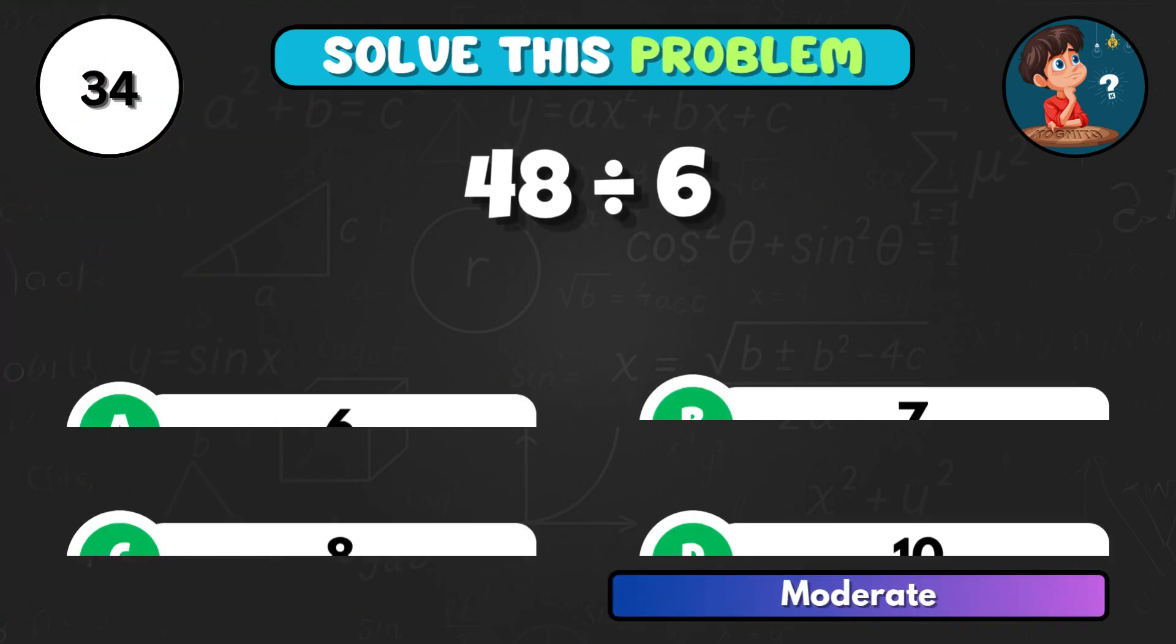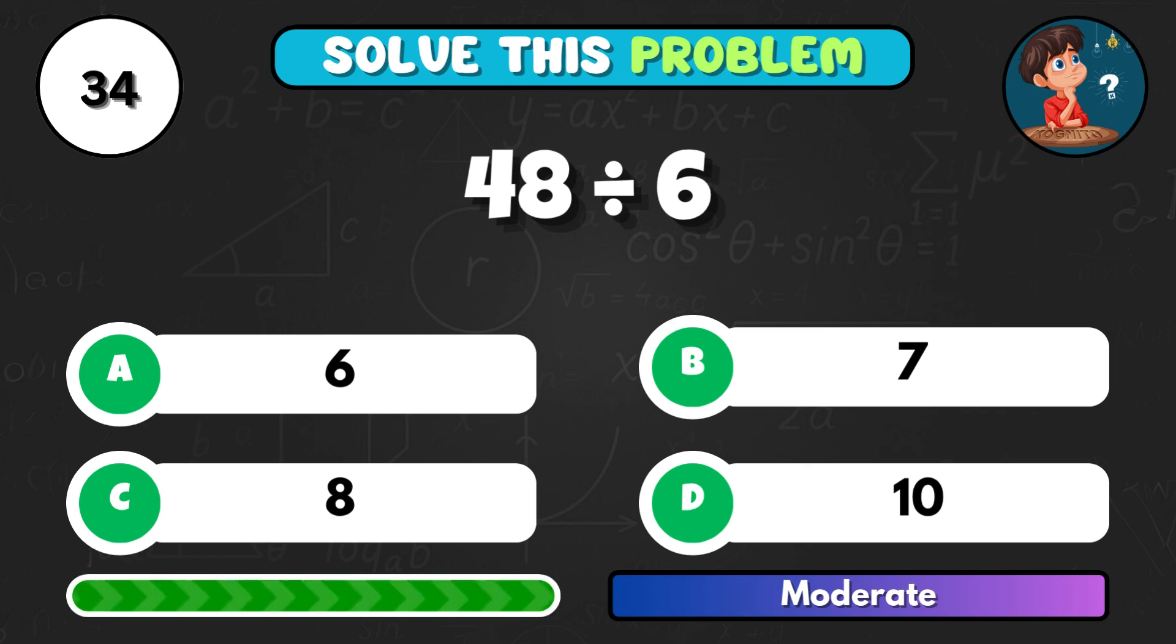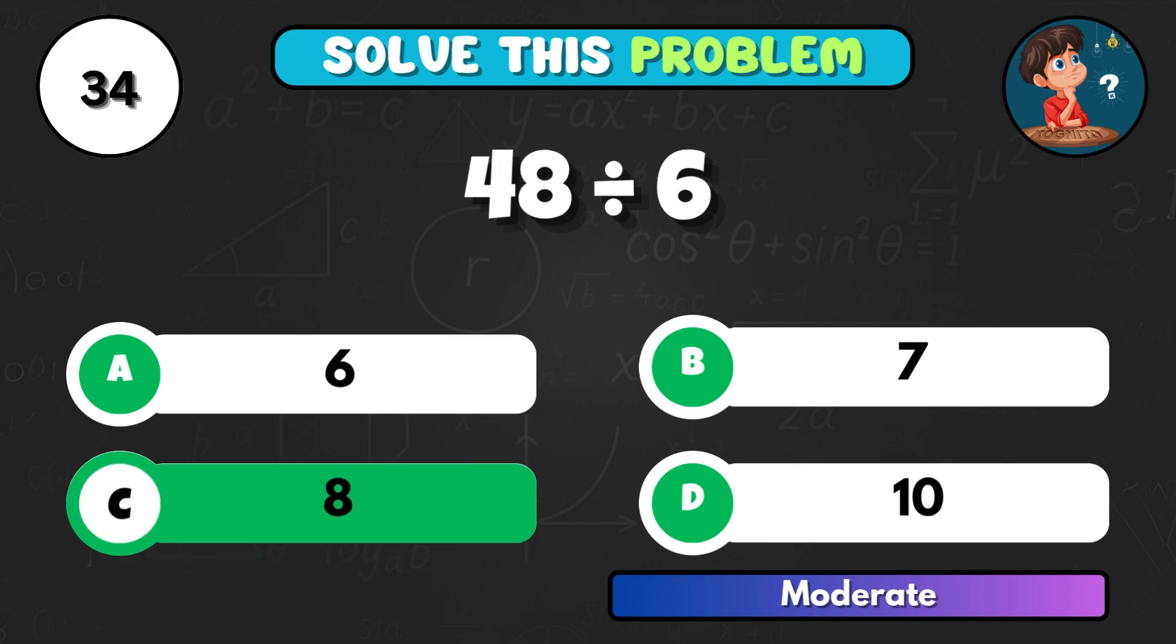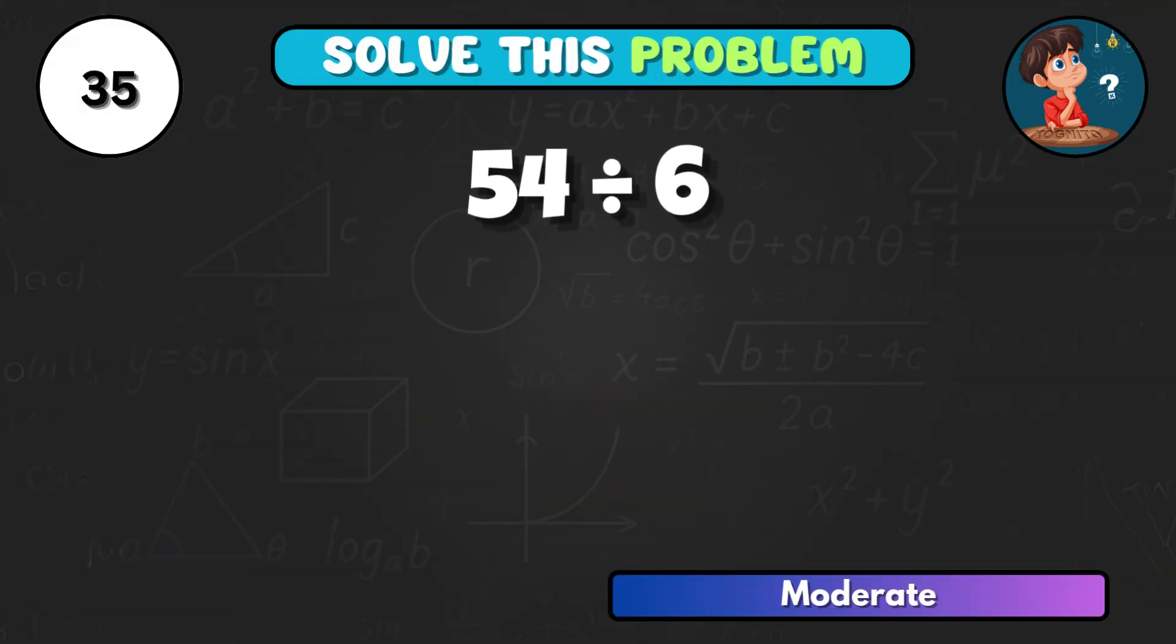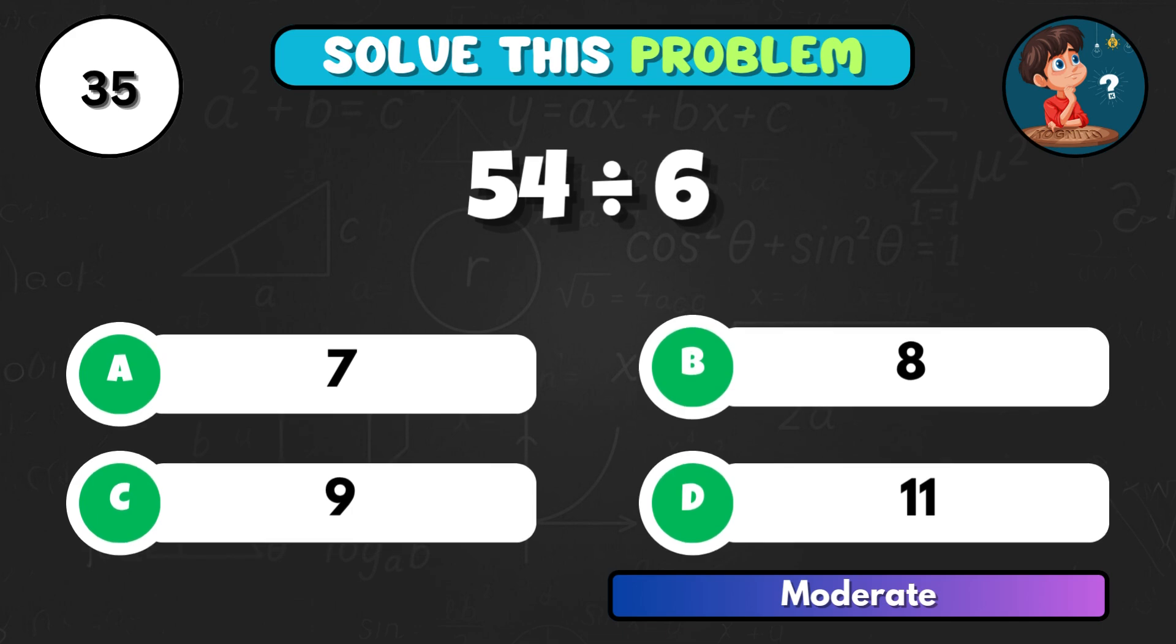48 divided by 6, can you solve it? That's C, giving 8. 54 divided by 6, what's the total? Correct answer C equals 9.